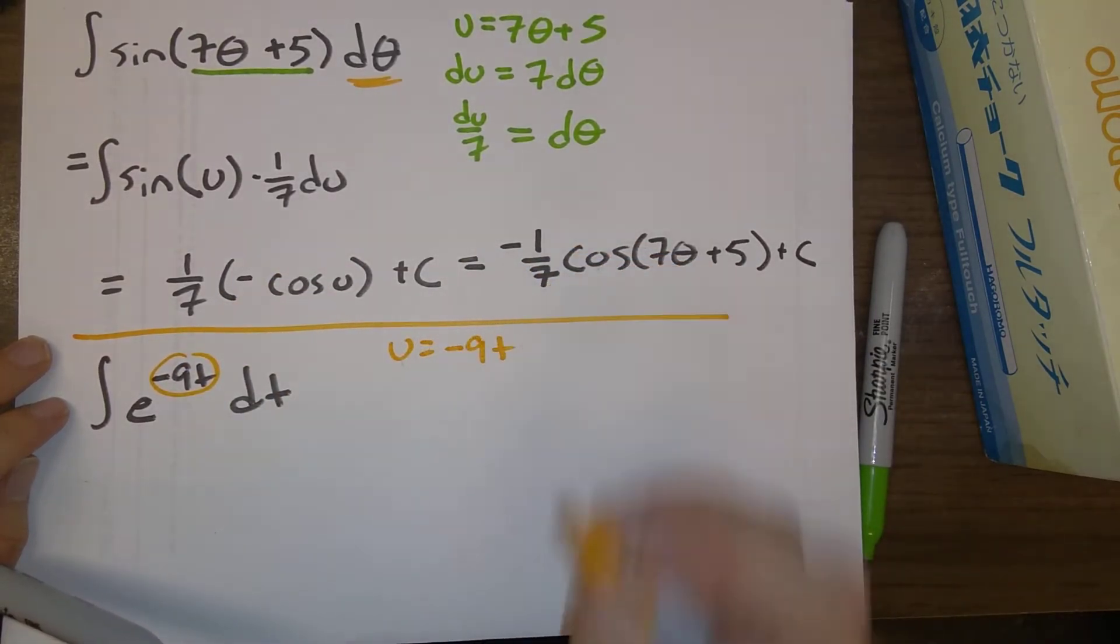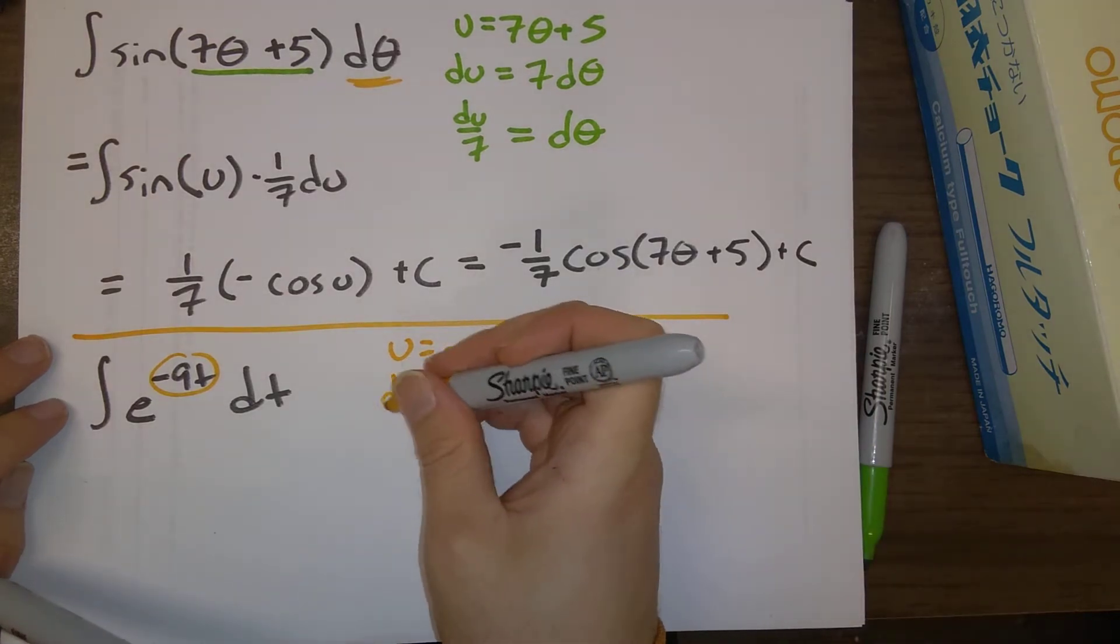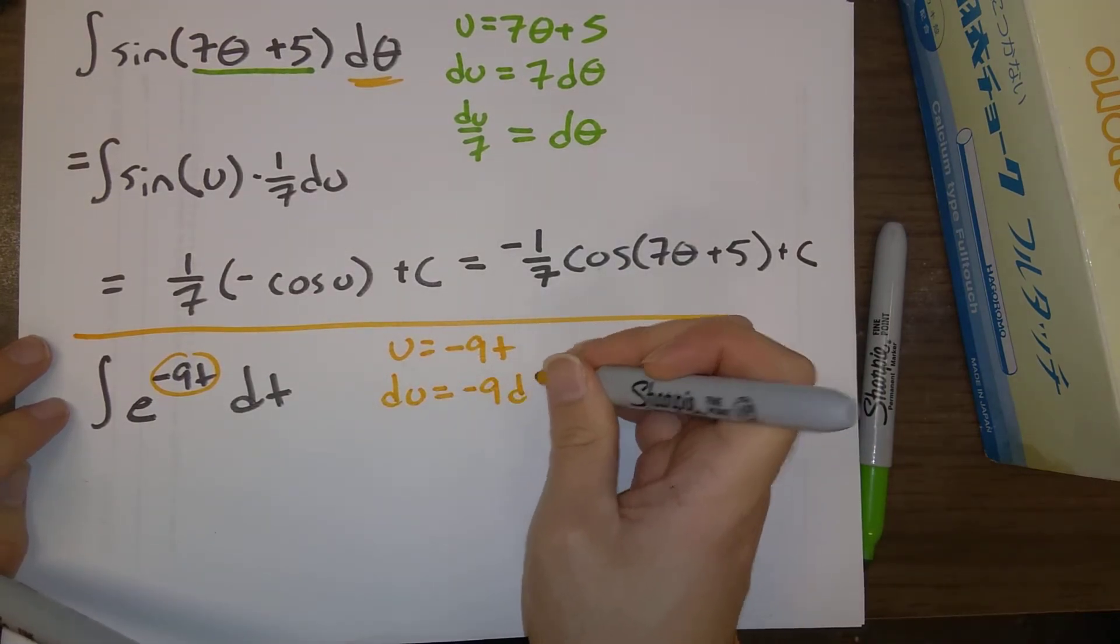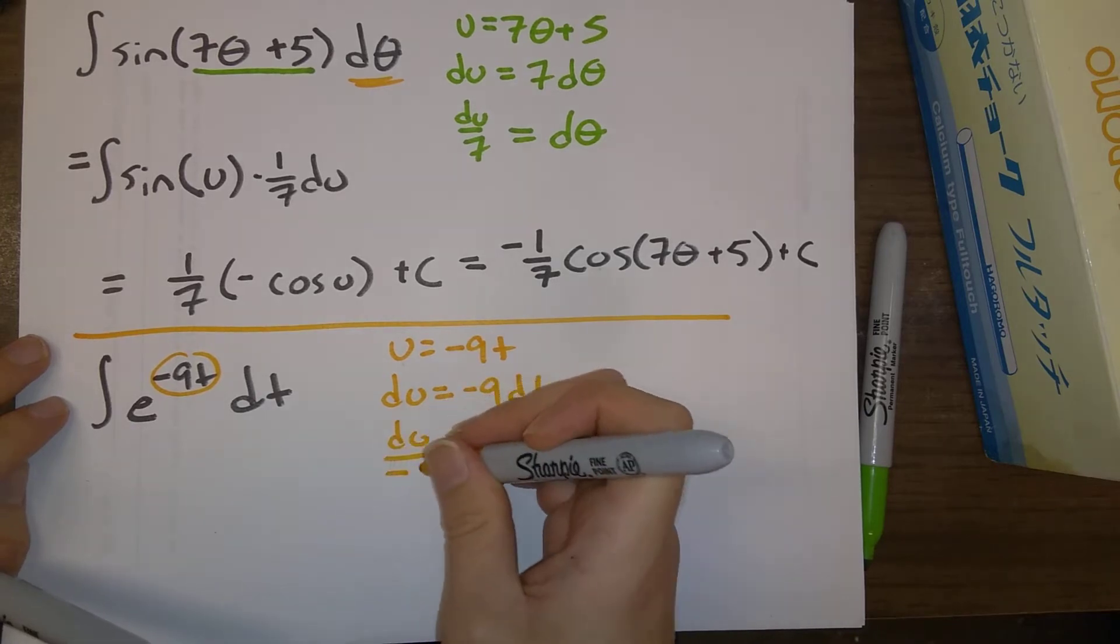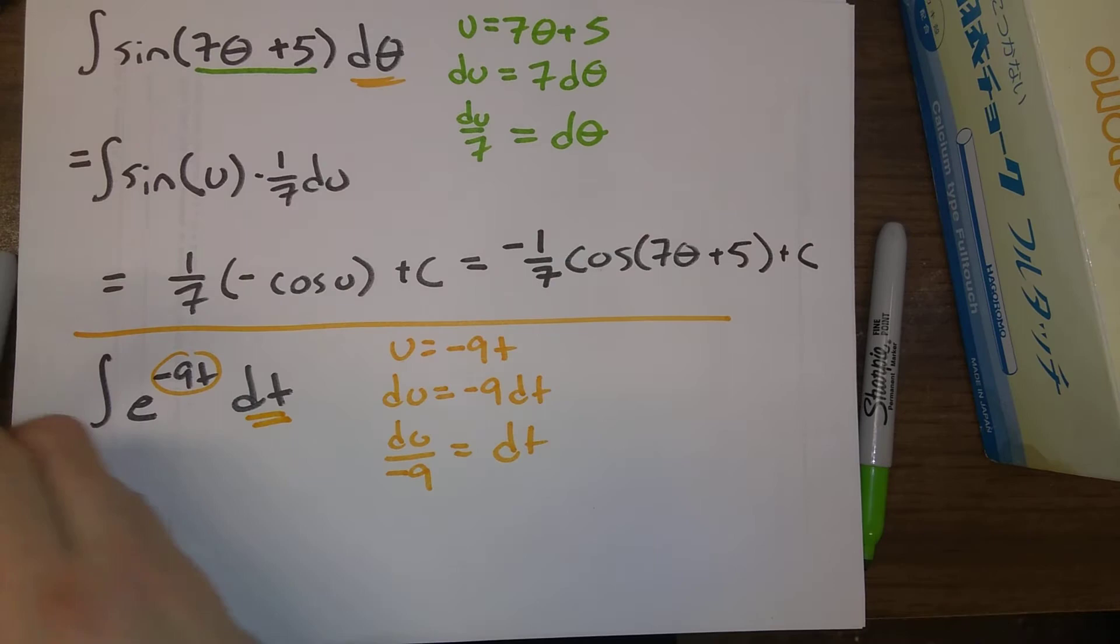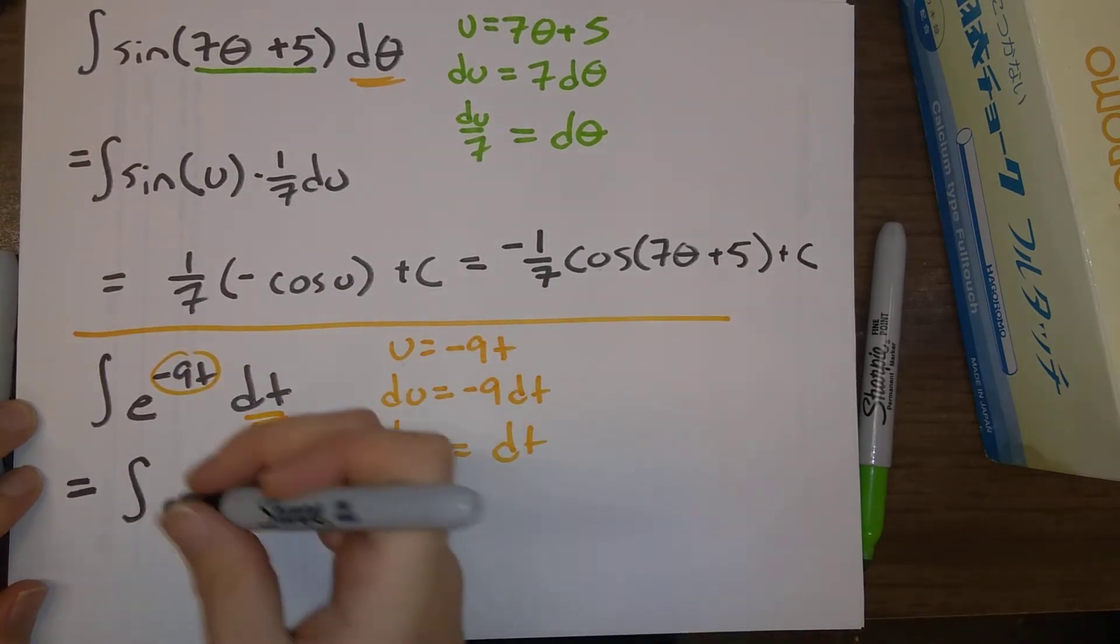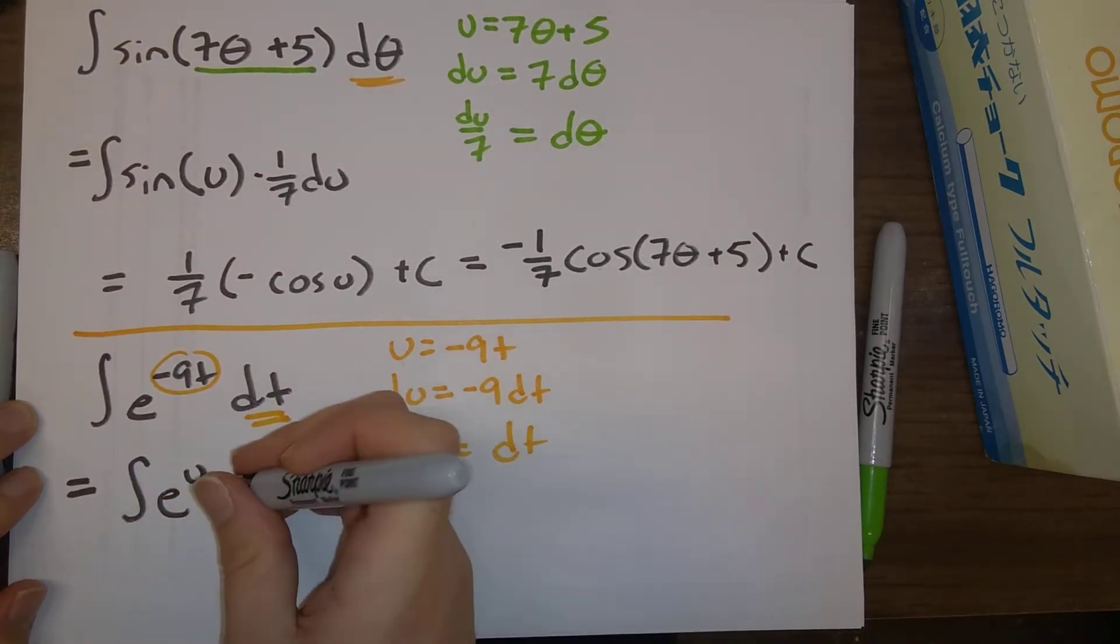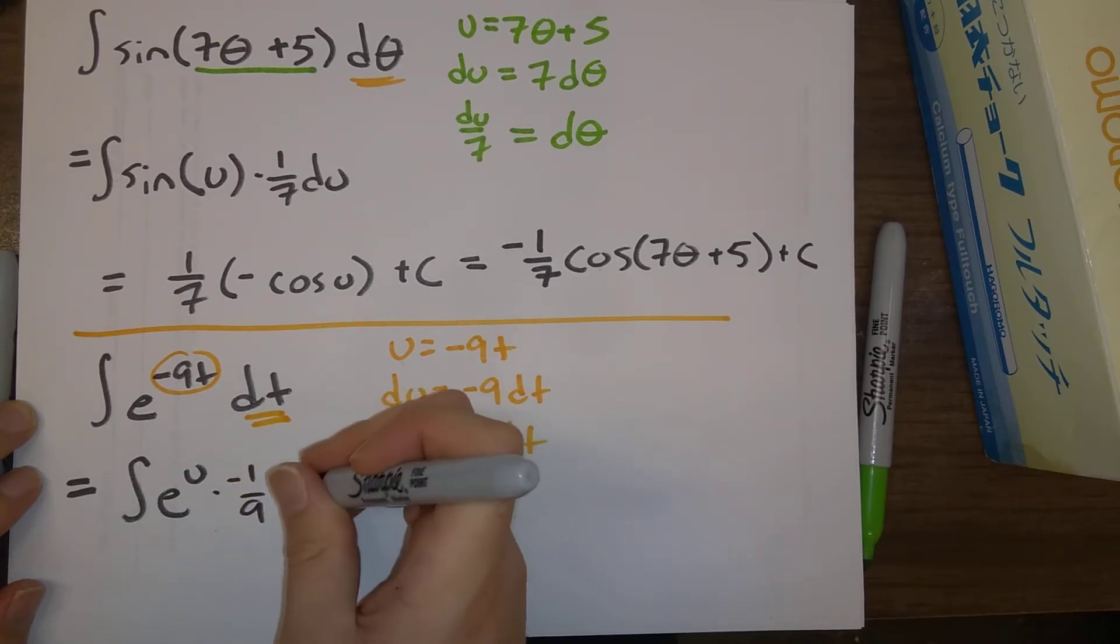Our natural choice, u is equal to minus 9t. So du is equal to minus 9 dt, or du divided by minus 9 is dt. So we'll substitute that in for dt. So what do we have? e to the u times minus 1 9th du.